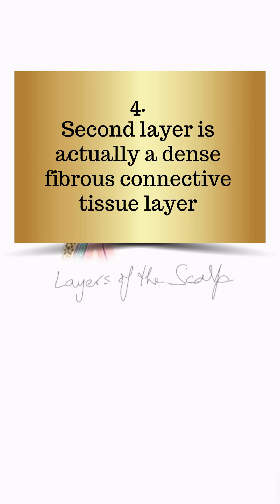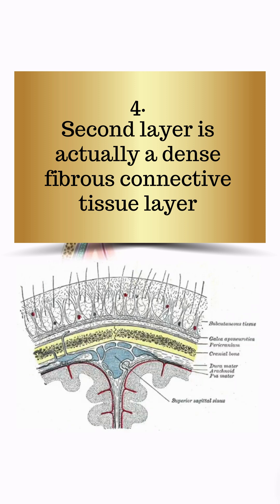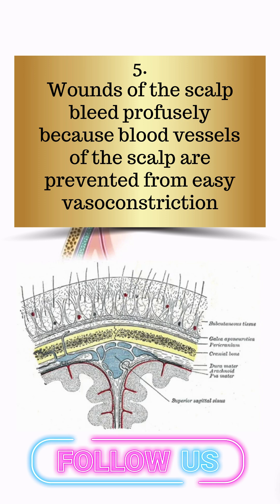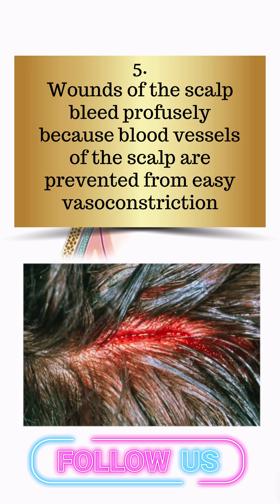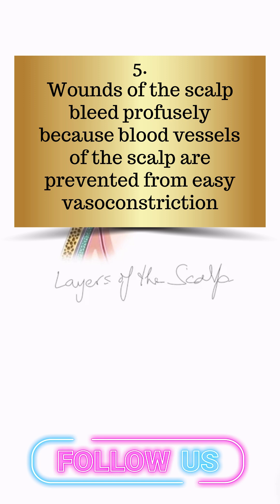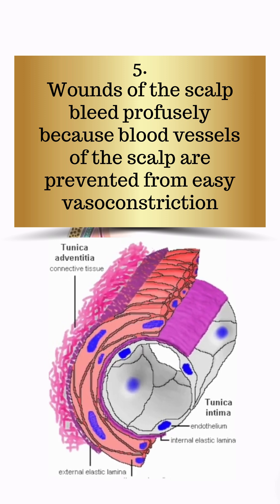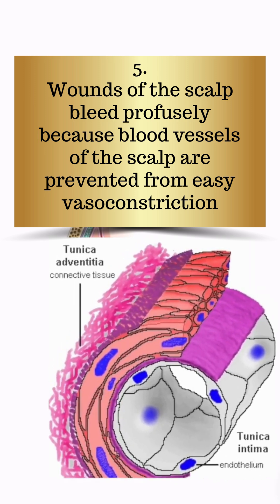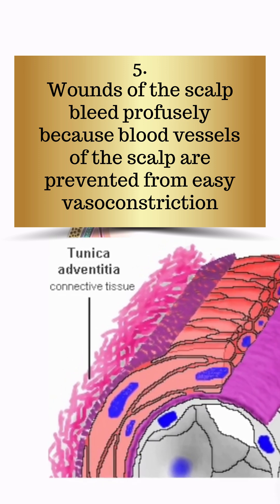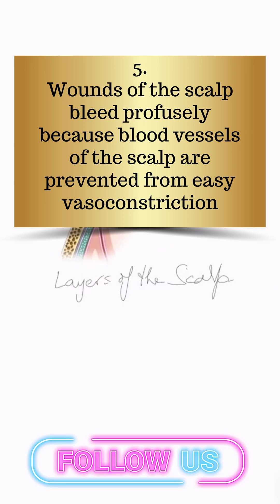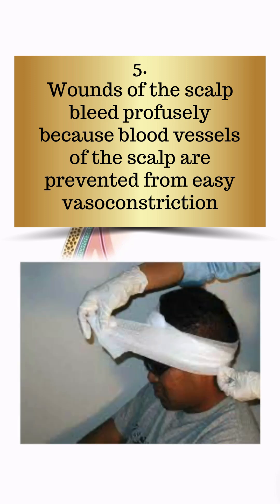Another point to add: the second layer is dense connective tissue, unlike the fourth layer which is loose areolar connective tissue. Remember, the second layer is not loose — it is dense fibrous connective tissue. The blood vessels running inside are embedded within this fibrous tissue. So wounds of the scalp bleed profusely — even small wounds bleed a lot — because subcutaneous vessels are prevented from retracting. Vessel constriction cannot occur easily because the tunica adventitia and outer wall of these vessels is blended with the dense connective tissue, so blood vessels cannot shrink, causing massive bleeding.